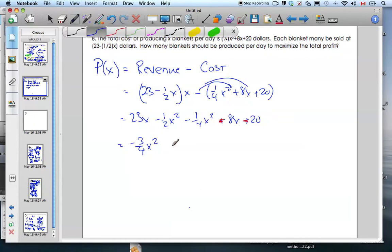So, going back here, I'm going to have positive 15X minus 20. That's my profit function.